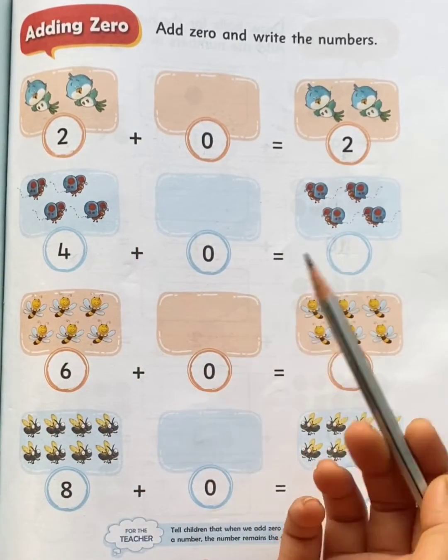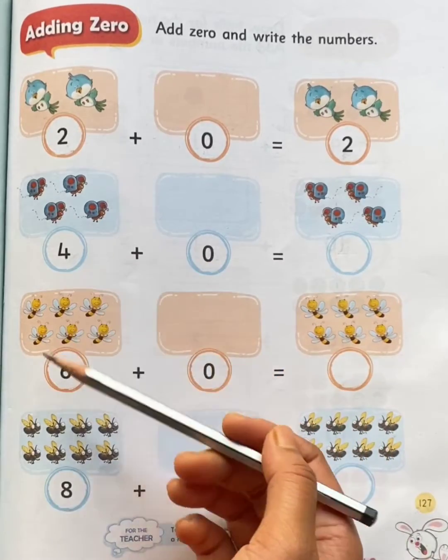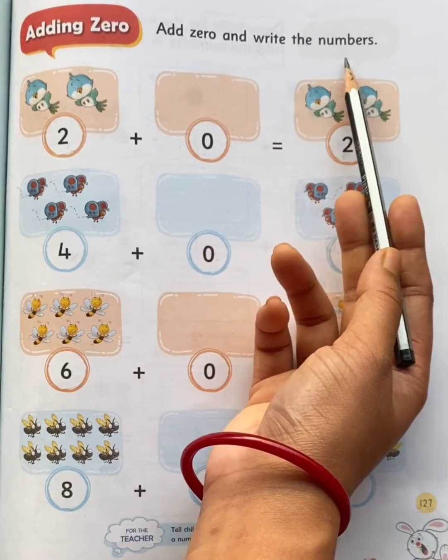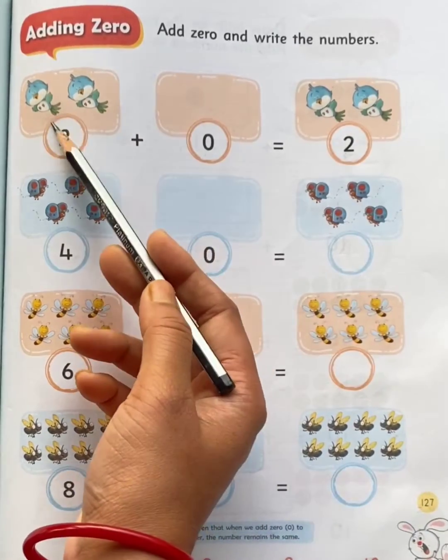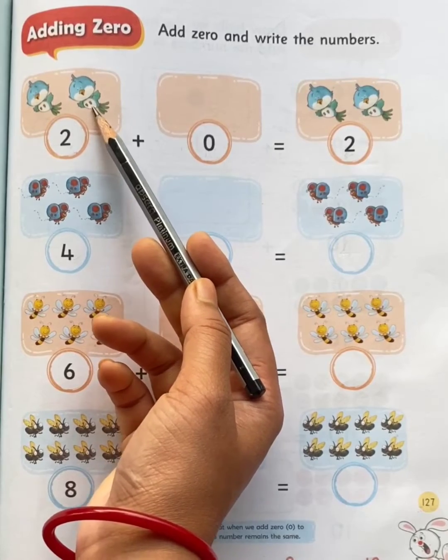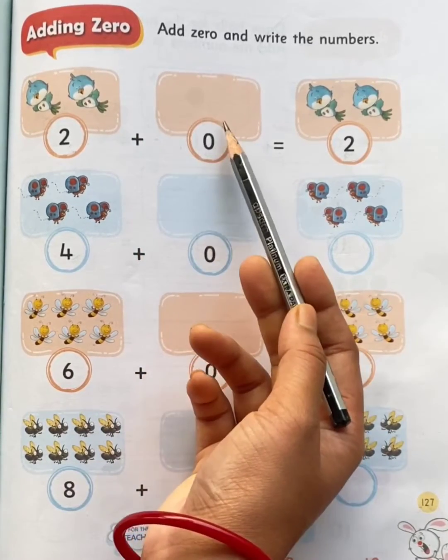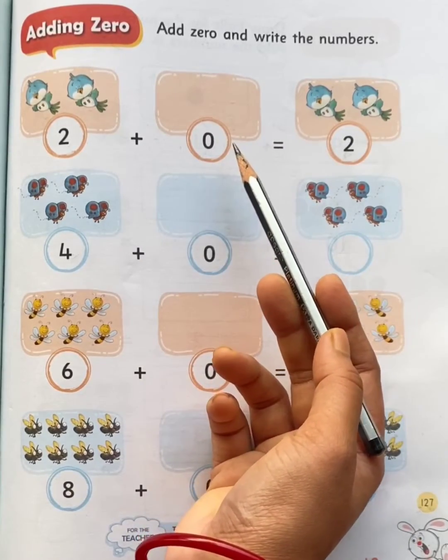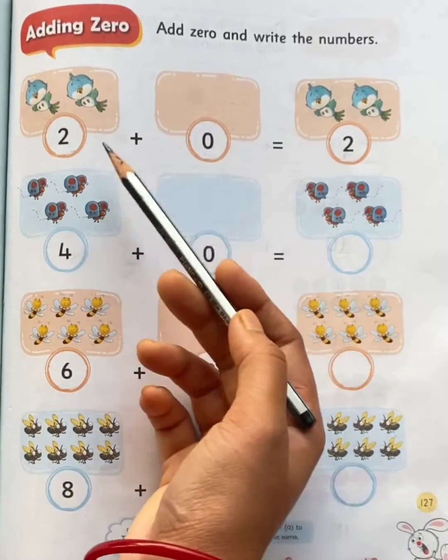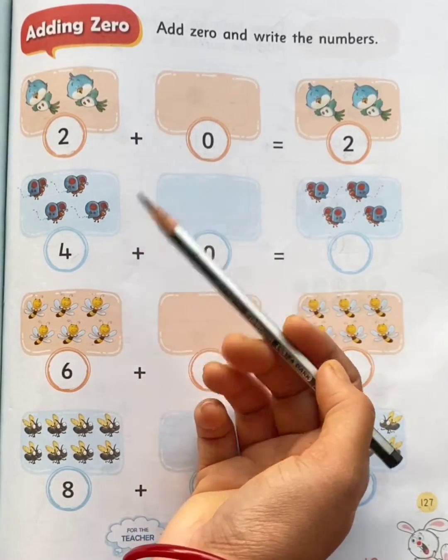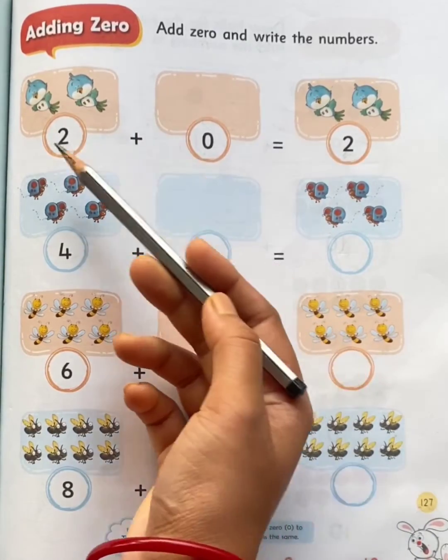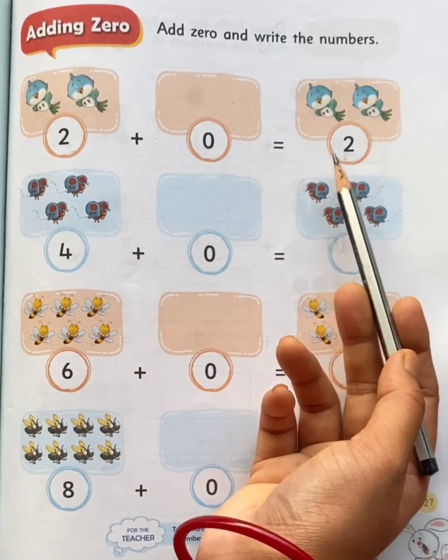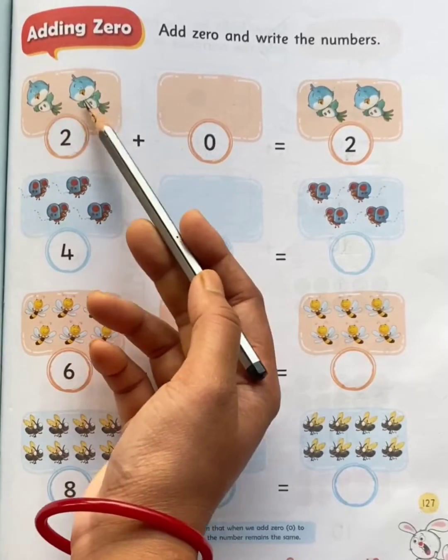Let us see what happens when zero is added to any number. Add zero and write the numbers. There are two birds in the first set and zero birds or no birds in the second set. So how many birds are there in both the sets in all? So here two plus zero is equal to two. Thus there are two birds in all.